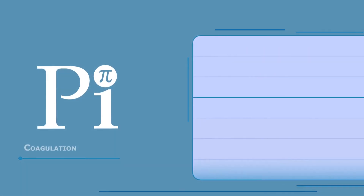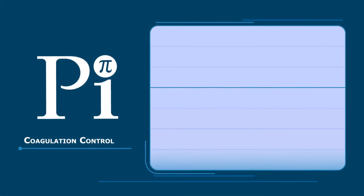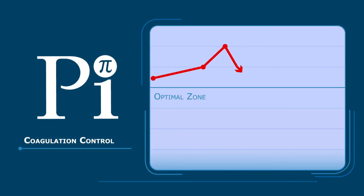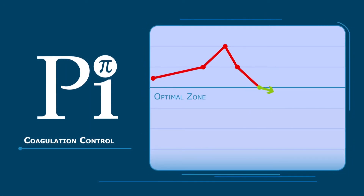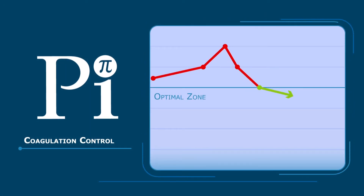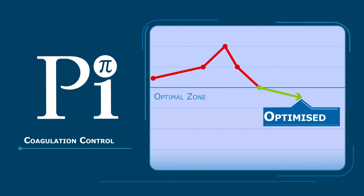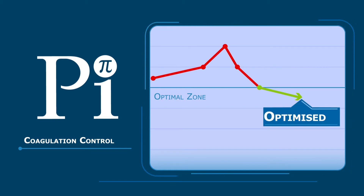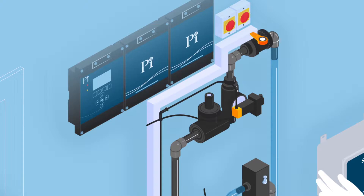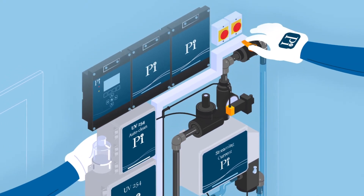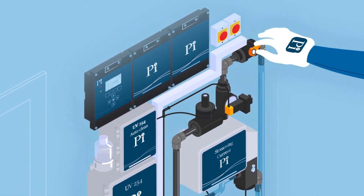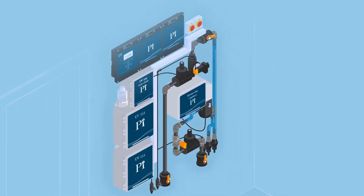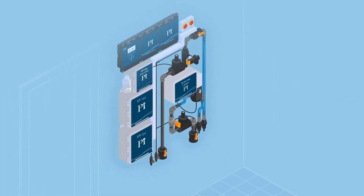With all these challenges, Process Instruments has a variety of coagulation control products and services to help you optimise your dosing to minimise waste and maximise effectiveness. At the heart of our solutions is CoagSense, a fully automated coagulation and pH control system.